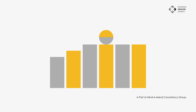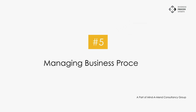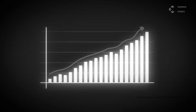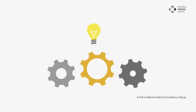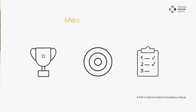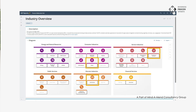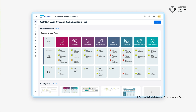Number five: managing business processes. SAP Signavio can be used to manage processes by tracking their progress, identifying risks, and resolving issues. This helps ensure that your processes are running smoothly and that you are meeting your goals.